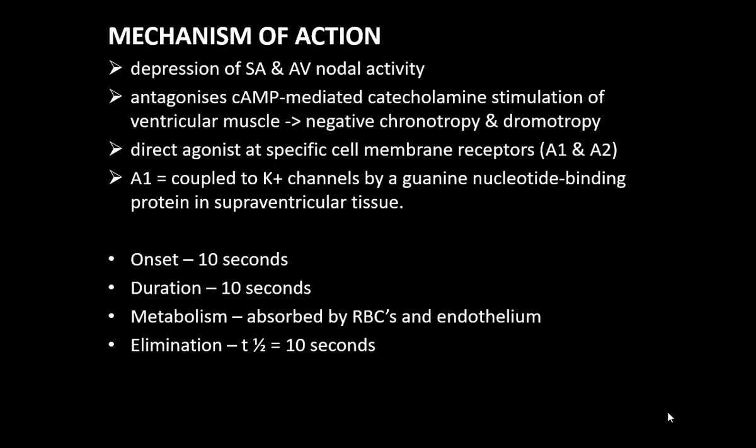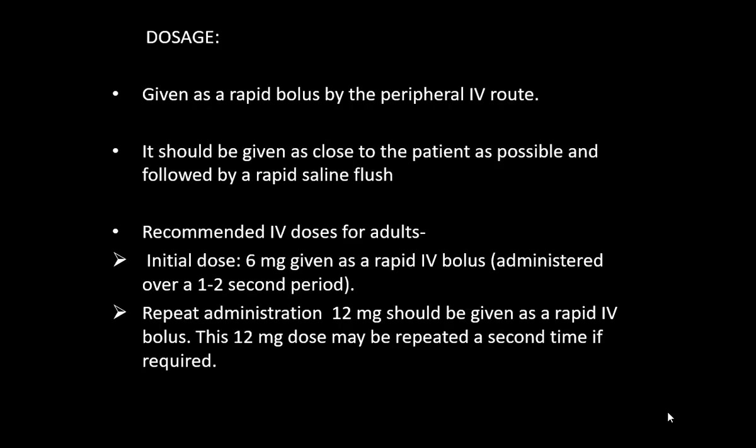Adenosine has an onset and elimination half-life of just 10 seconds — it is absorbed by RBCs and endothelium. It must be given with a rapid saline flush. Initial dose per ACLS: 6 mg rapid IV bolus over 1–2 seconds; repeat dose: 12 mg rapid IV bolus, which can be repeated. It should be administered as close to the patient as possible through a peripheral IV.